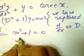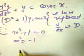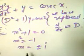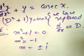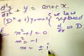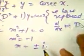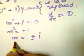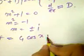m² = -1, so the value of m is equal to ±i. Now we know that when the value of m = ±i, the complementary function (CF) is equal to c1·cos x + c2·sin x.